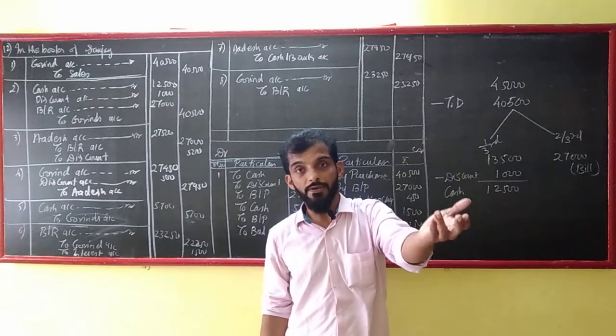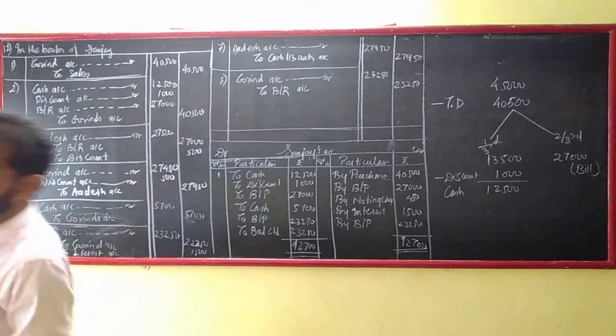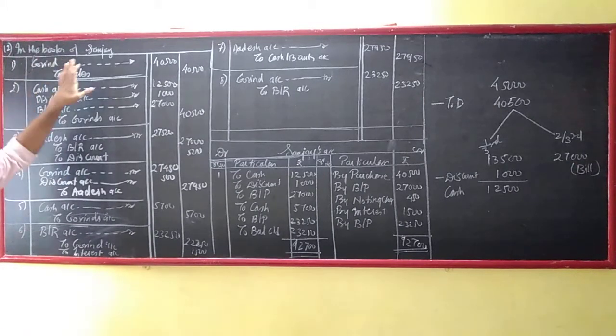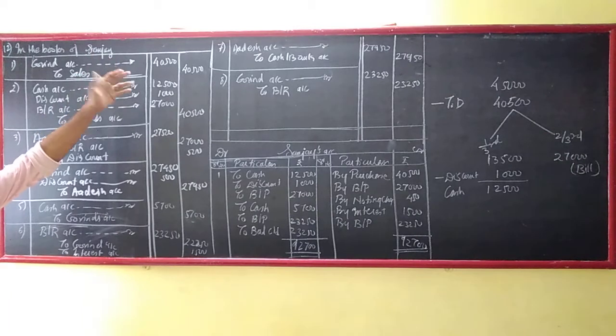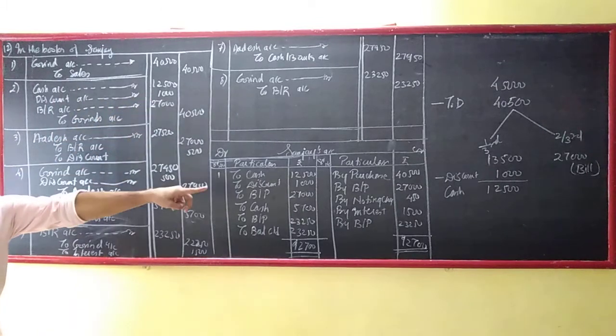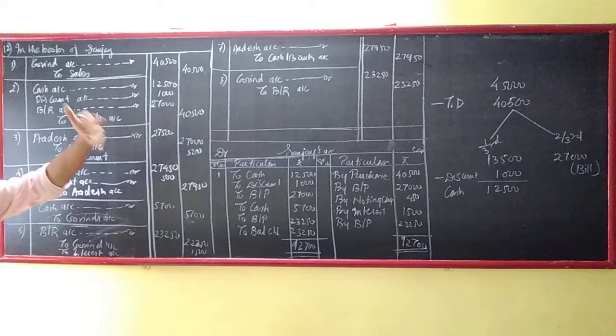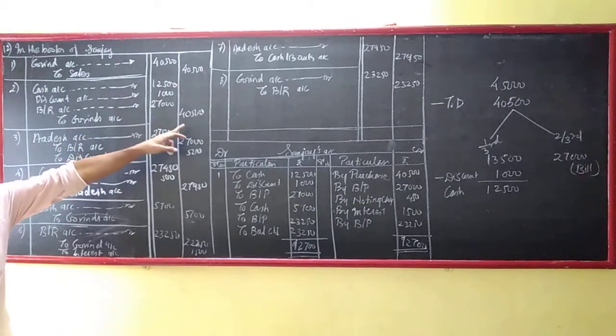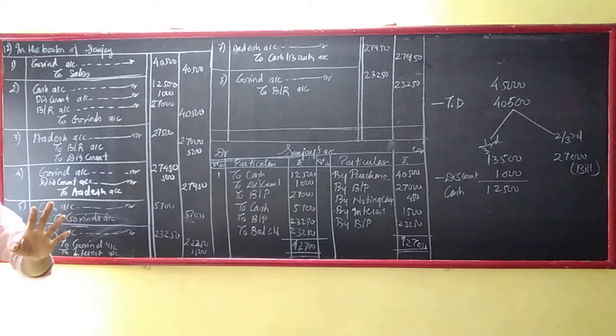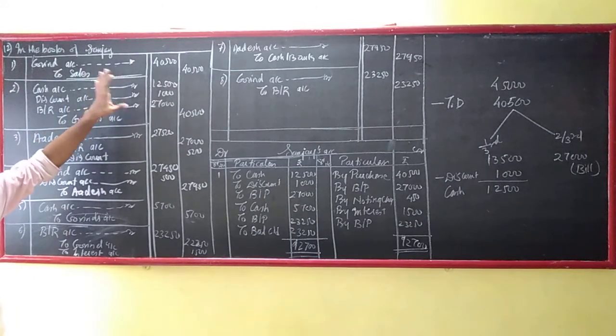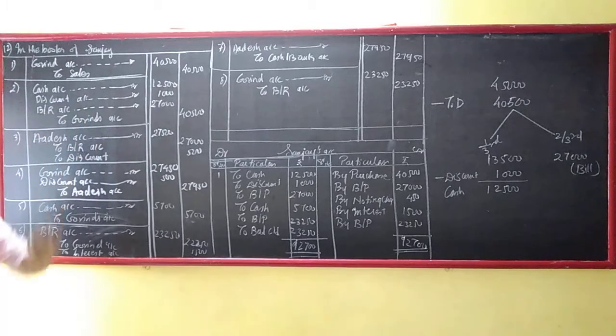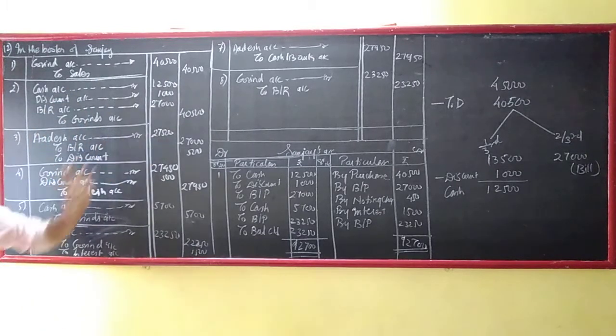Let us understand the first two entries. Govind account debit to sales 40,500. Cash account debit 12,500, discount account debit 1,000 which is a loss, bills receivable account debit 27,000. Overall if you total in two entries, how much is it? 40,500. If you have seen in the textbook, the entries are different. If you are comfortable with that, follow that. I have no issues. If you are comfortable with this, follow this. You will not get anything wrong. Everything will be correct.